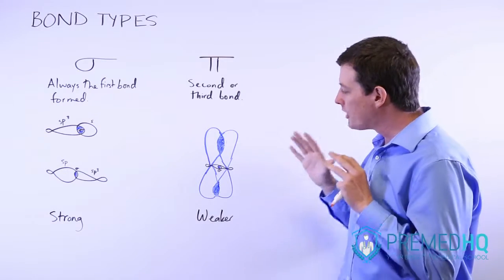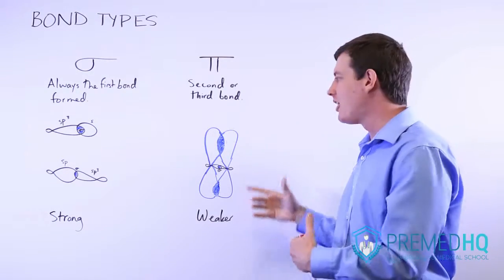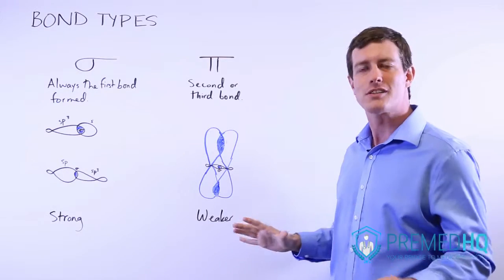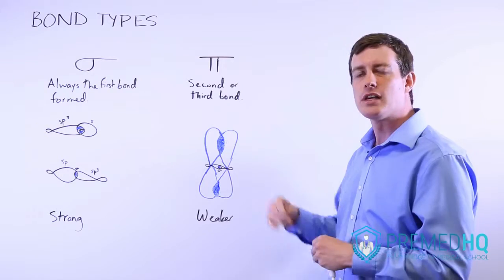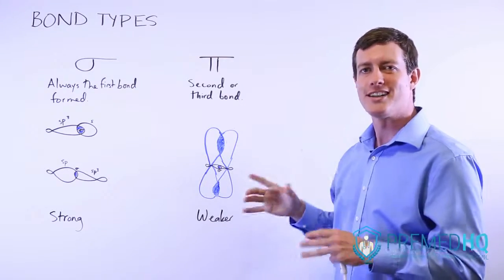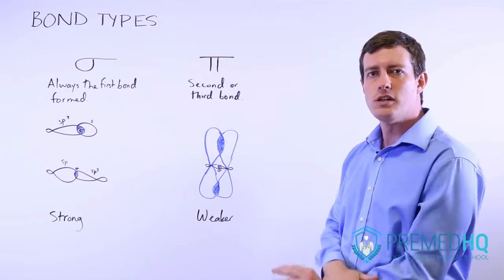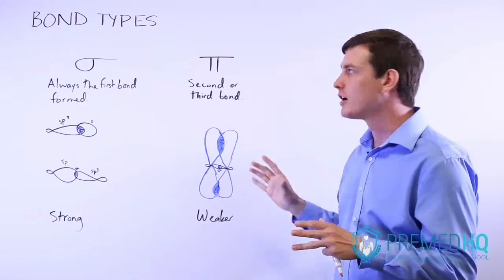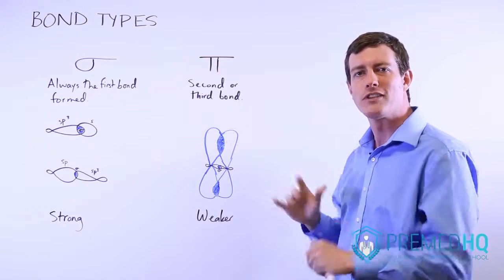The pi bond is a weaker type of bond. But because it's added to the sigma bond, which is always the first one formed, any double or triple bond has both a sigma and a pi bond, making it very strong. Double and triple bonds are very strong, but the pi bonds themselves are not the strong part.